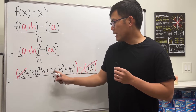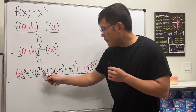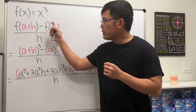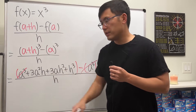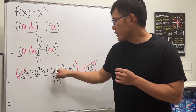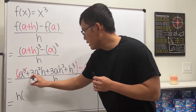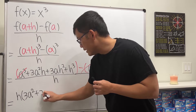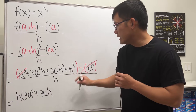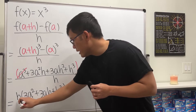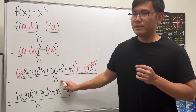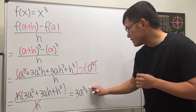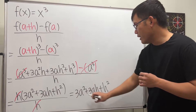Notice that every remaining term has at least one h, so we can factor out h from the top. Remember, in the difference quotient the h will always get cancelled. Factoring gives h times (3a² + 3ah + h²), all divided by h. The h's cancel, and the final answer is 3a² + 3ah + h².